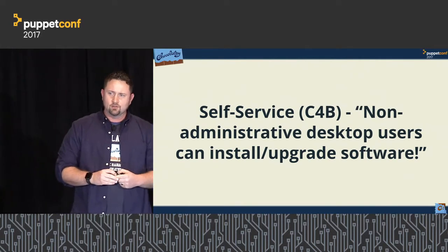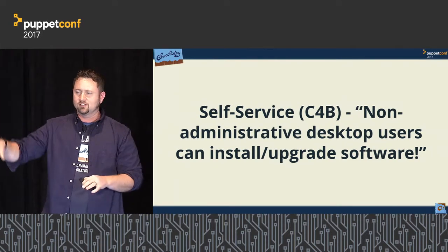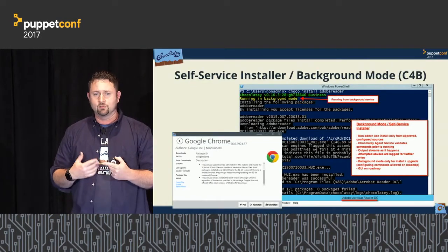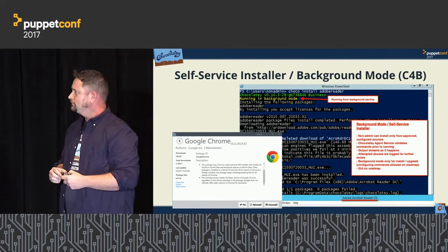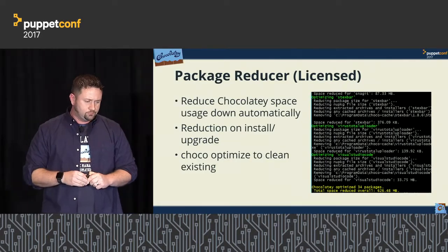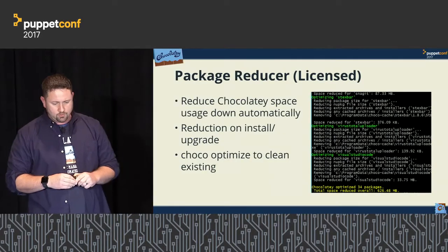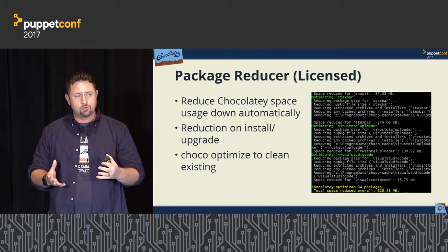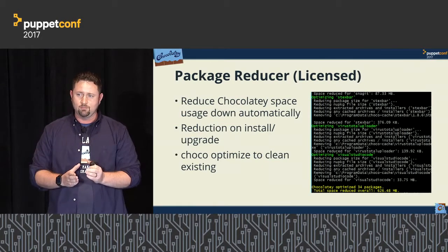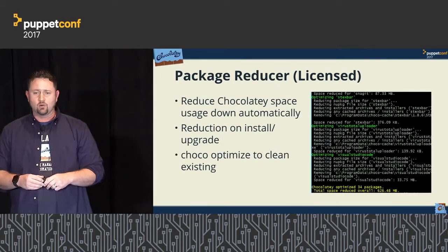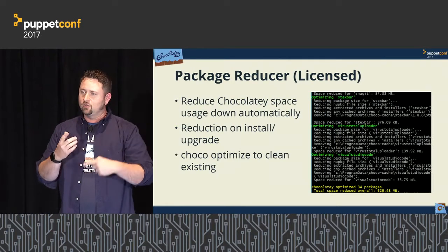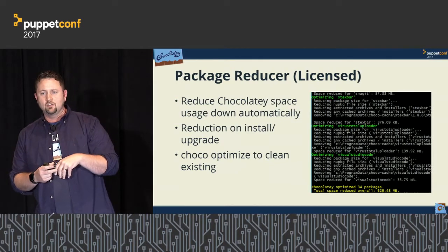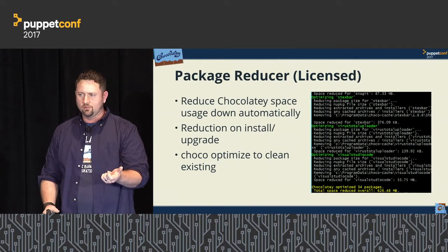If you have servers and desktops with non-administrative desktop users, we have a thing called self-service that allows them to install and upgrade their own software. Package Reducer gives people the ability to reduce disk space usage when using Chocolatey. That lib folder fills up over time — Package Reducer automatically keeps it down. It also comes with a Choco Optimize command to clean up existing packages, deflating them down to like 3 or 4K.